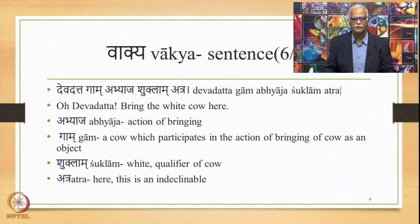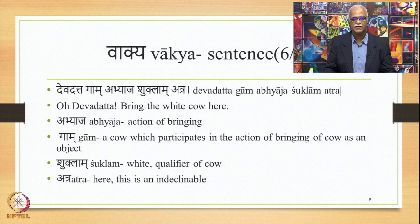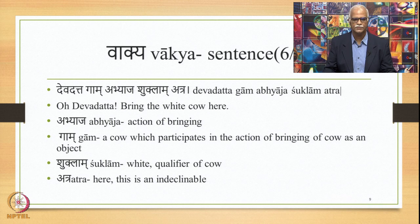Abhyāja is the Ākhyātam. Gām is the Kāraka — the cow participates as an object in the action of bringing. Since abhyāja is second person singular, Tvam is the Kartṛpada, which is not different from Devadatta here; so indirectly Devadatta acts as the Kartṛ. Go is the participant in the relation of Karma. Śukla is the qualifier of Go, and Atra is an indeclinable. So we have an Ākhyātam, a Kāraka (Devadatta and Go), a Viśeṣaṇa (Śukla), and an Avyaya (Atra). Therefore the second definition of Vākya applies, and this unit qualifies to be called a sentence.